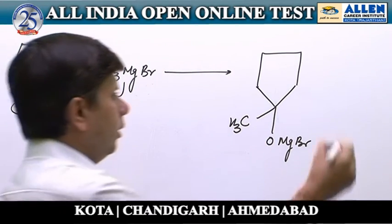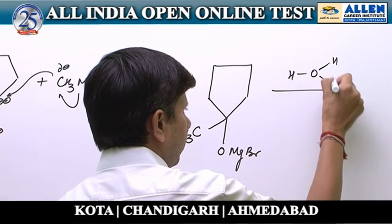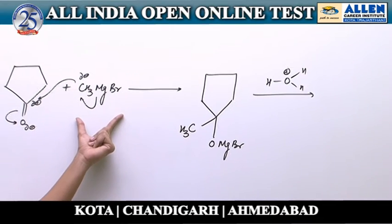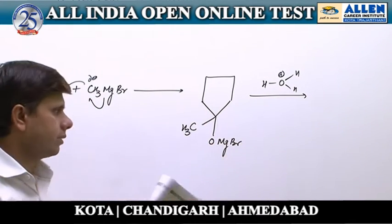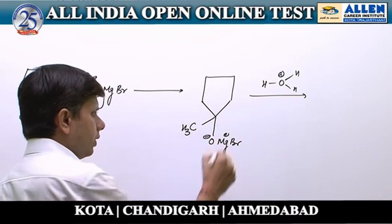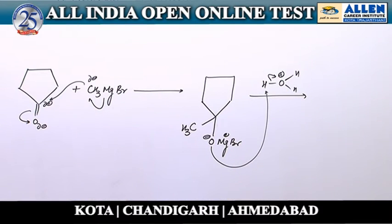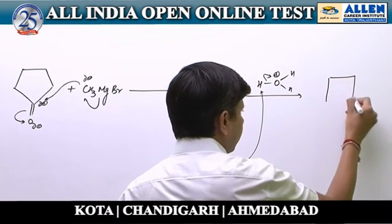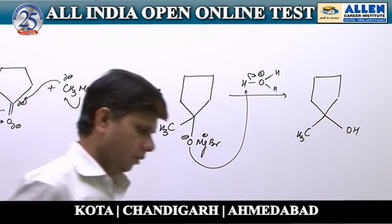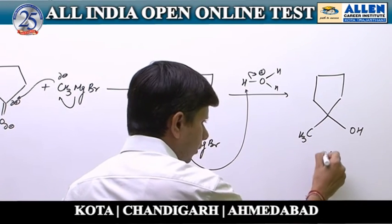This product is then subjected to hydrolysis with H₃O⁺. The negatively charged oxygen undergoes acid-base reaction with H₃O⁺, giving compound A, which is a tertiary alcohol — 1-methylcyclopentan-1-ol.